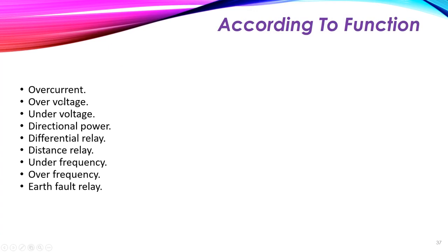Each relay type performs a different protective function. The overcurrent relay operates the circuit breaker when the current exceeds a certain value. The overvoltage relay signals the circuit breaker when voltage exceeds a certain limit. The undervoltage relay acts when voltage falls below a certain limit. The directional power relay trips when the direction of power or current is reversed beyond a certain value.